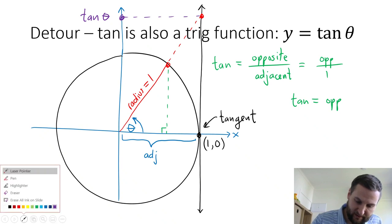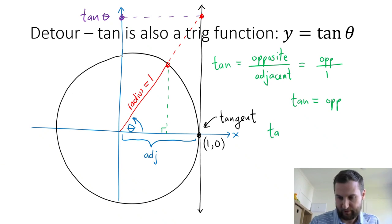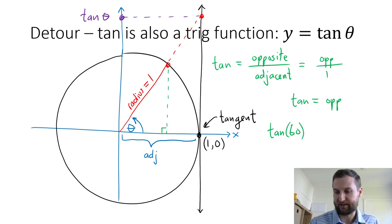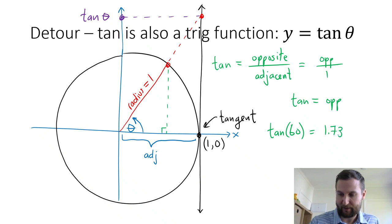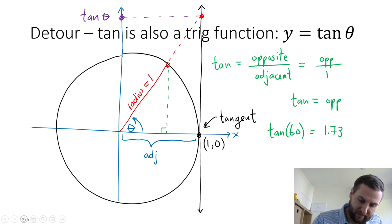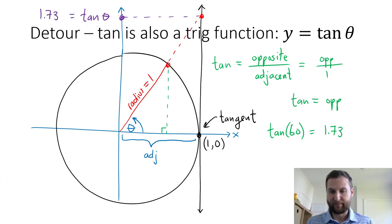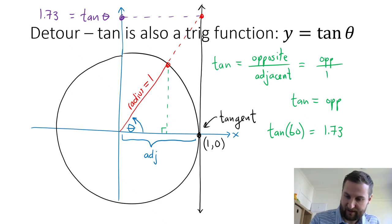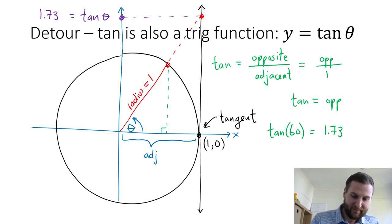So if theta is 60 degrees, which is approximately how big I've drawn it, then tan 60 is 1.73, and this point on my y-axis is 1.73 as an approximation. That was just a detour to talk about tangent and tie it back to the unit circle — it just means touching a curve.